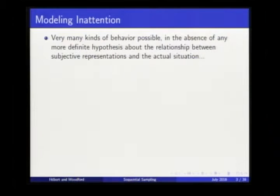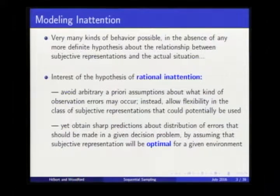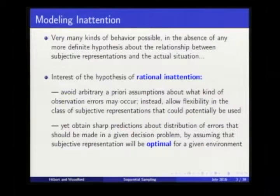This general description needs to be made precise. Without specifying the relationship between the actual situation and the subjective representation in the decision maker's mind, the hypothesis won't make specific predictions. This is where Chris Sims's concept of rational inattention becomes interesting — not making arbitrary assumptions about observation errors, but allowing a flexible class of relationships while still getting sharp predictions by assuming the subjective representation is optimal for the given environment.